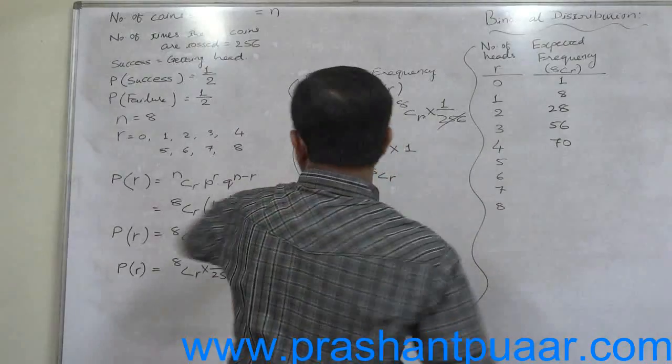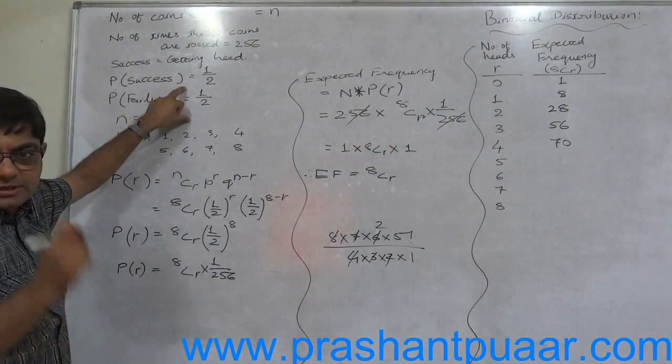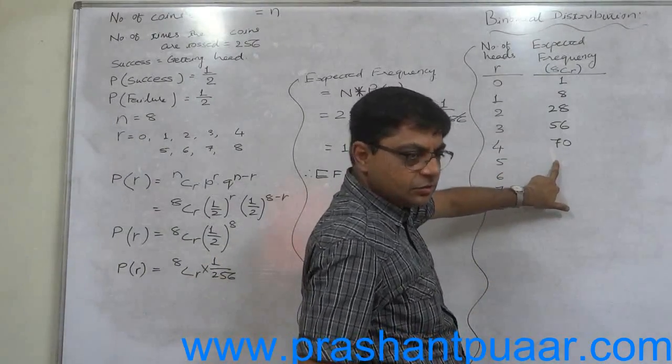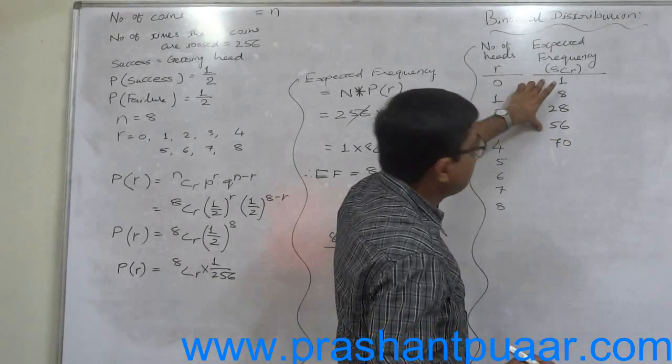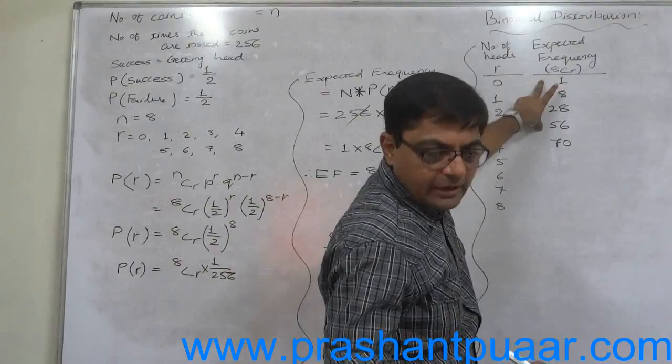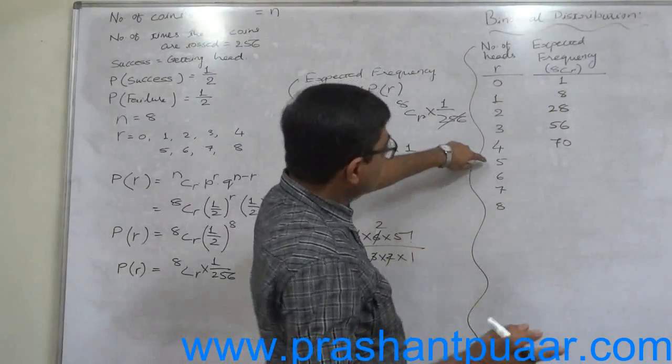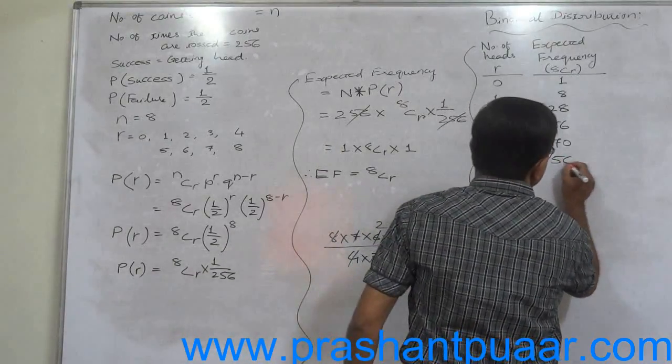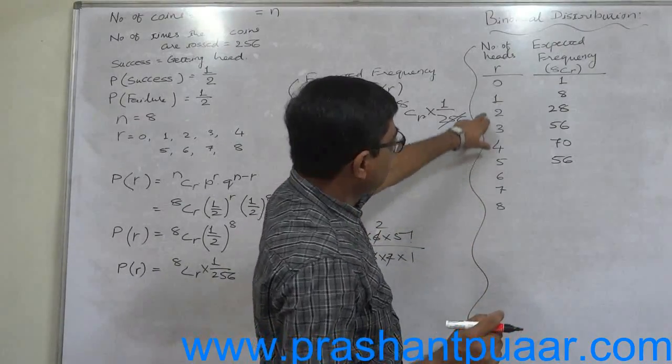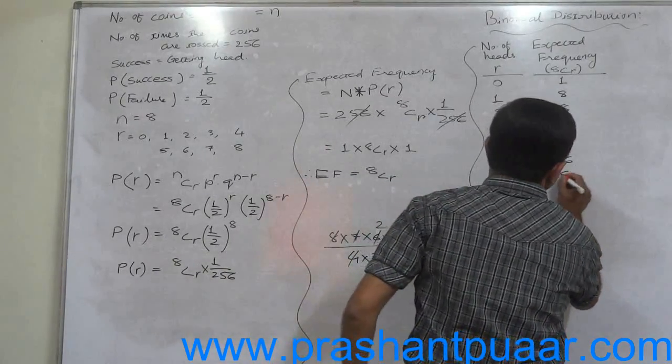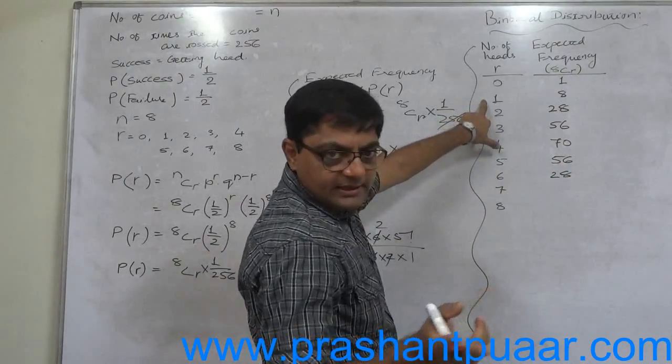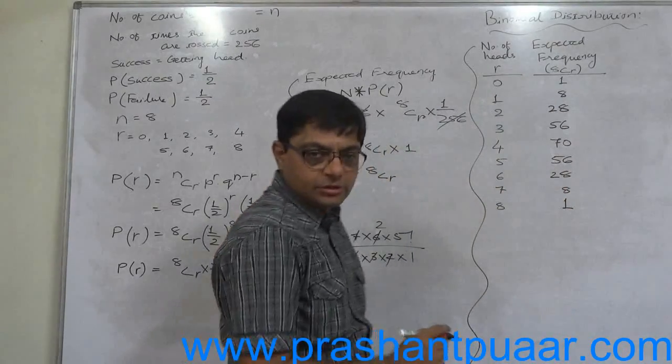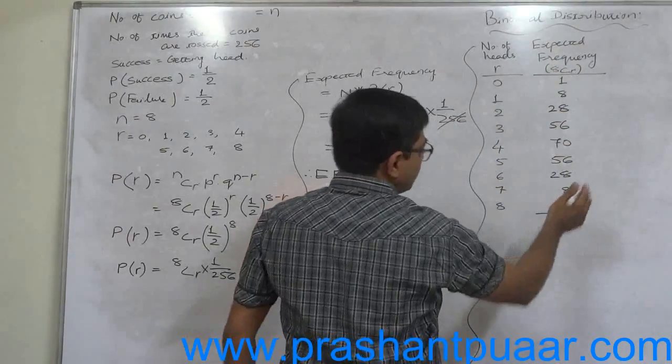Now actually P equals to Q equals to half. So binomial distribution leads to symmetric distribution. The middle value or middle frequency is the highest. So the remaining frequency must be in descending order, or in other words, same values in descending order. What is 8C5? It is exactly equal to 8C3, so it will come 56. What is 8C6? It is exactly equal to 8C2, so it should be 28. 8C7 is equal to 8C1, so it is 8. And 8C8 is equal to 8C0, so it should be 1. Just verify the total must be 256.